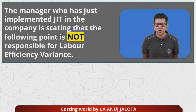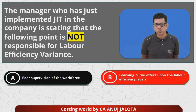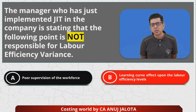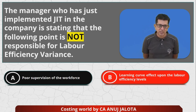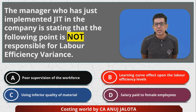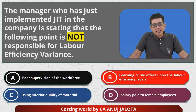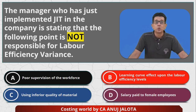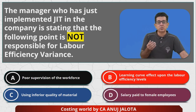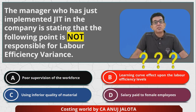Let's look at our four options. Option A: poor supervision of the workforce. Option B: learning curve effect upon the labor efficiency levels. Option C: using inferior quality of materials. And Option D: salary paid to female employees. I actually don't know where option D comes from — I don't know how to answer it, because I don't know if we are computing labor efficiency only for male employees.